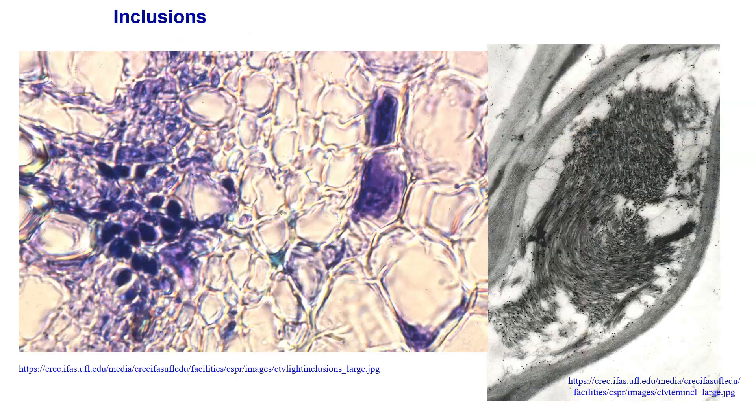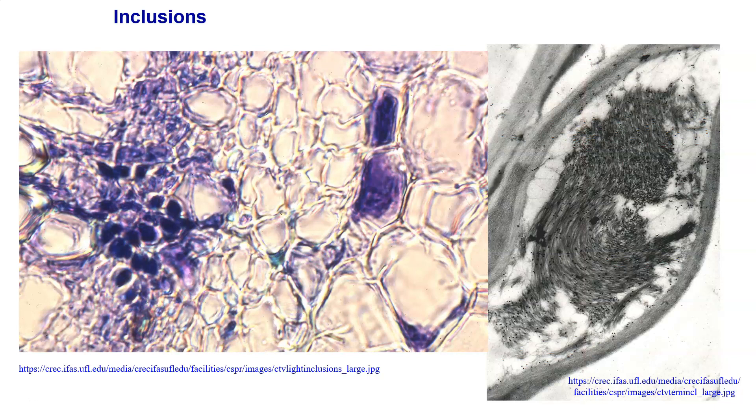The serology is going to be in its own part. What inclusions are, when the virus gets into the cell and the virus takes over the cell, the virus generates a lot of protein. These become little protein swirls, so to speak, on the inside of the host cell.